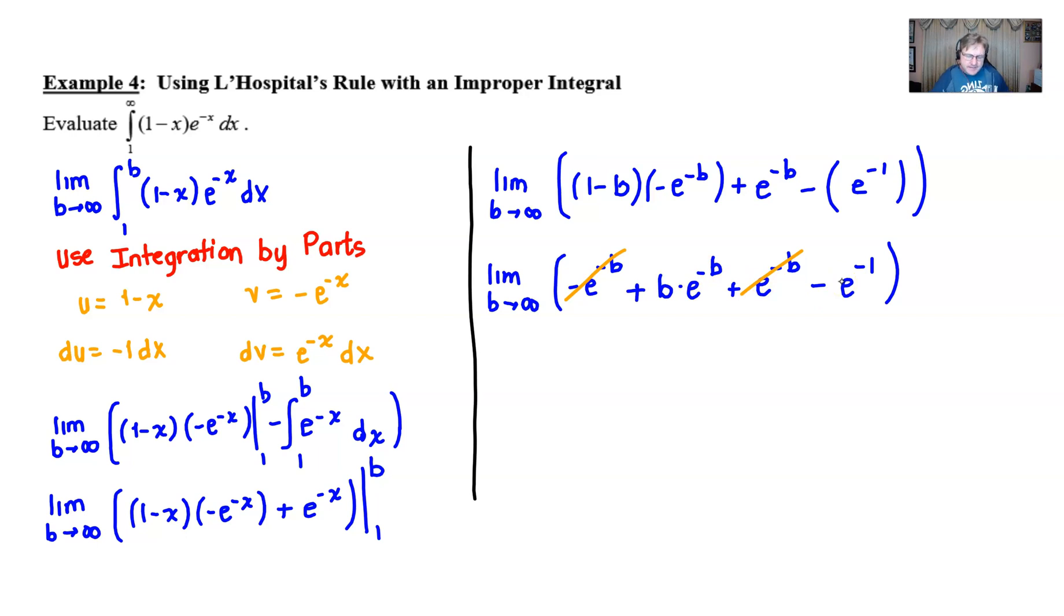So that's certainly less that you have to work with in finding your limit. And then all that's left is this b times e to the negative b minus e to the negative 1. Now, taking the limit of b times e to the negative b is a little tricky because we can't just immediately insert infinity in for b because what we're really going to get is an infinity divided by infinity result. That's what we call indeterminate.